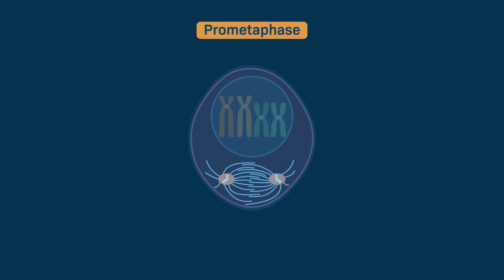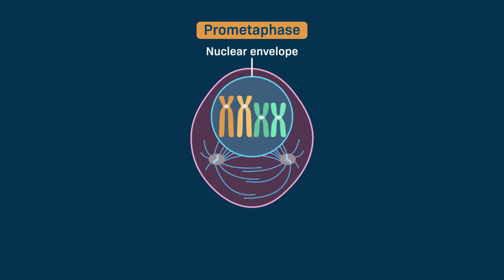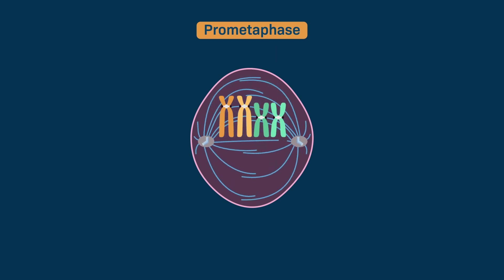During prometaphase, the microtubules continue to lengthen, pushing the centrosomes to opposite ends of the cell. The nuclear envelope also breaks down, which makes the replicated condensed chromosomes accessible to the microtubules.